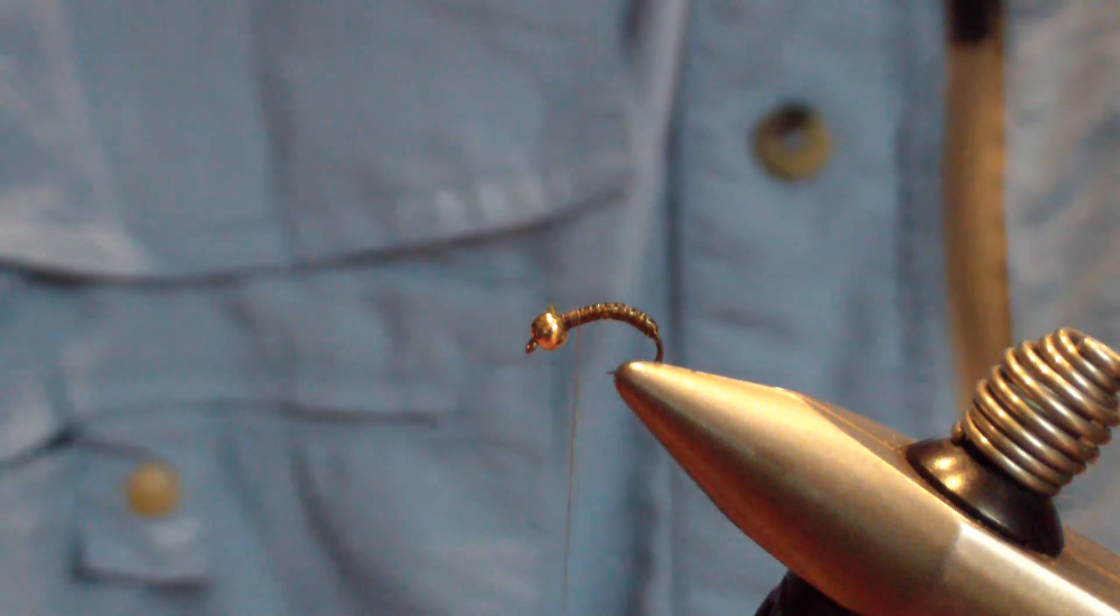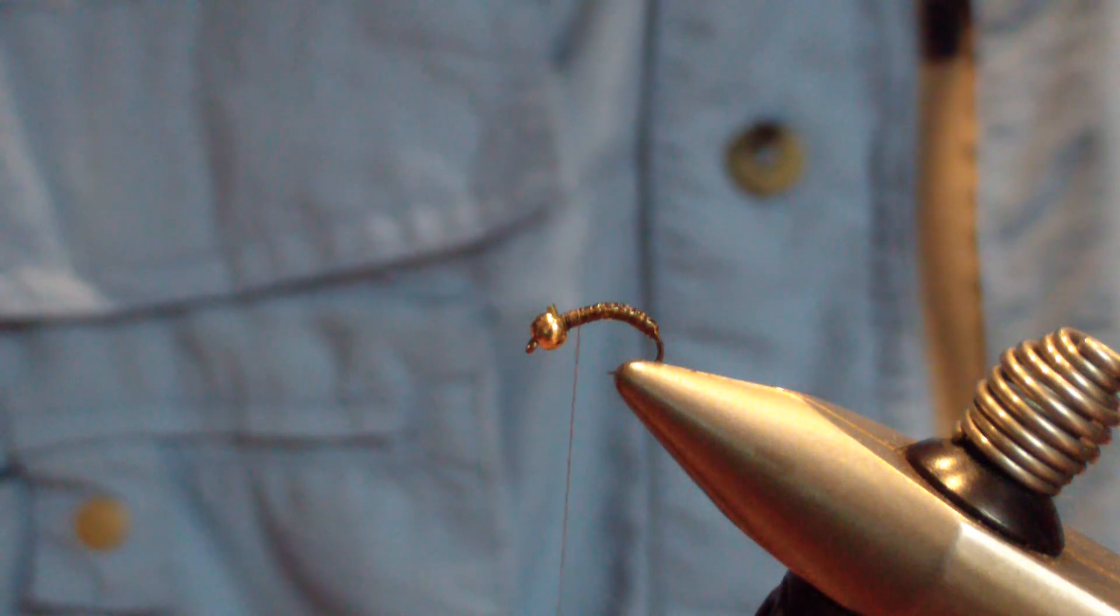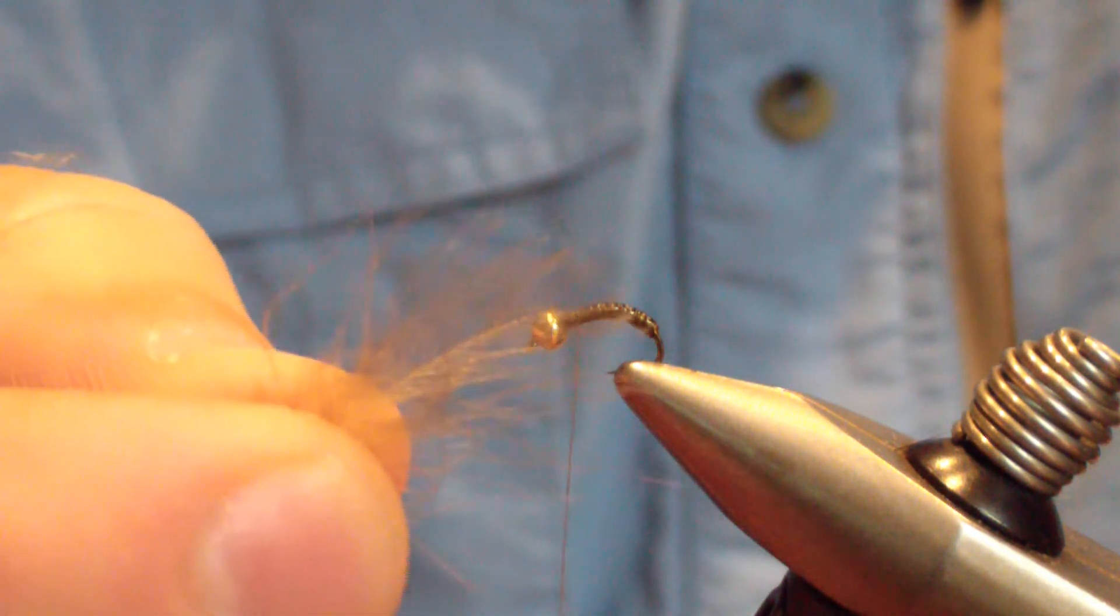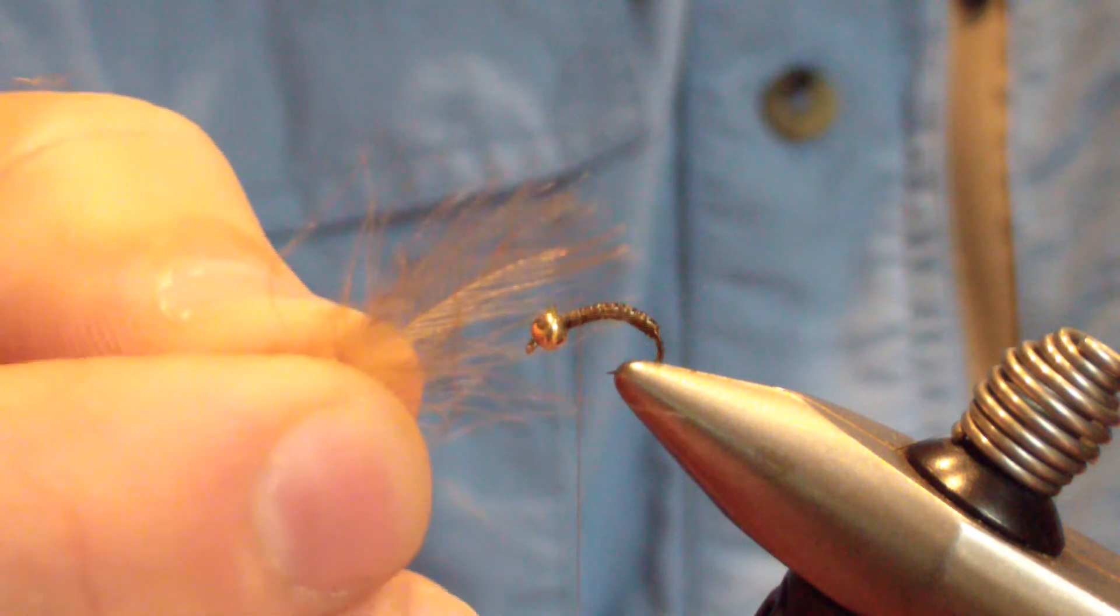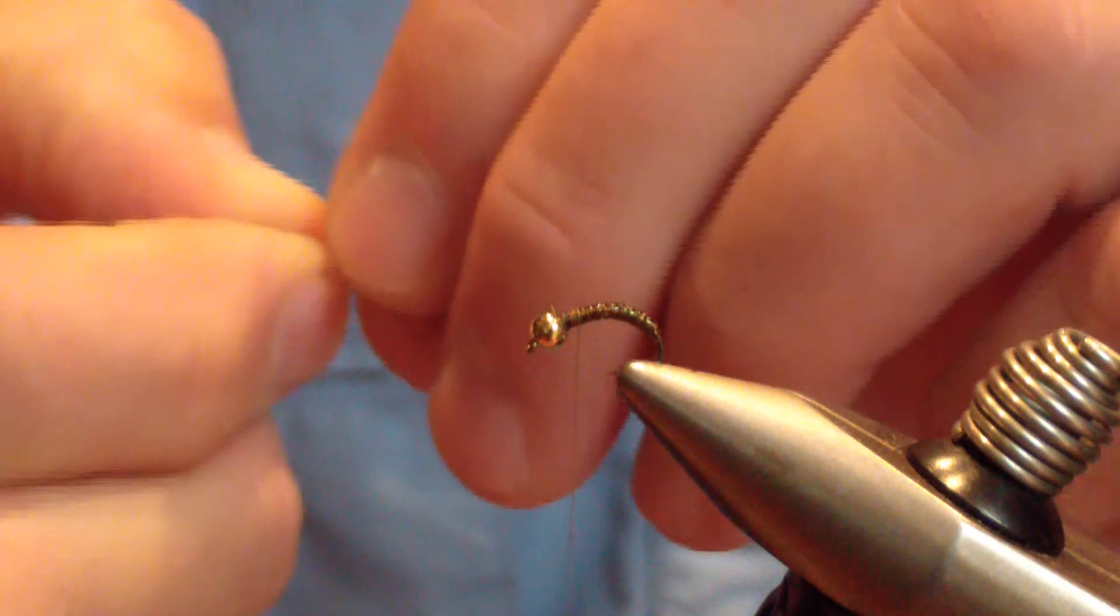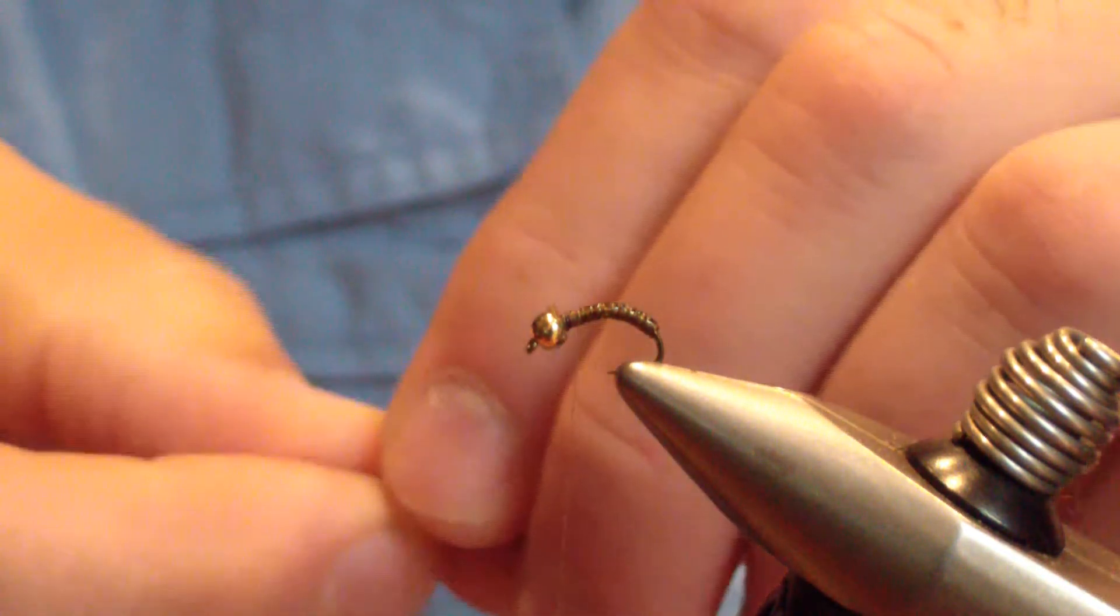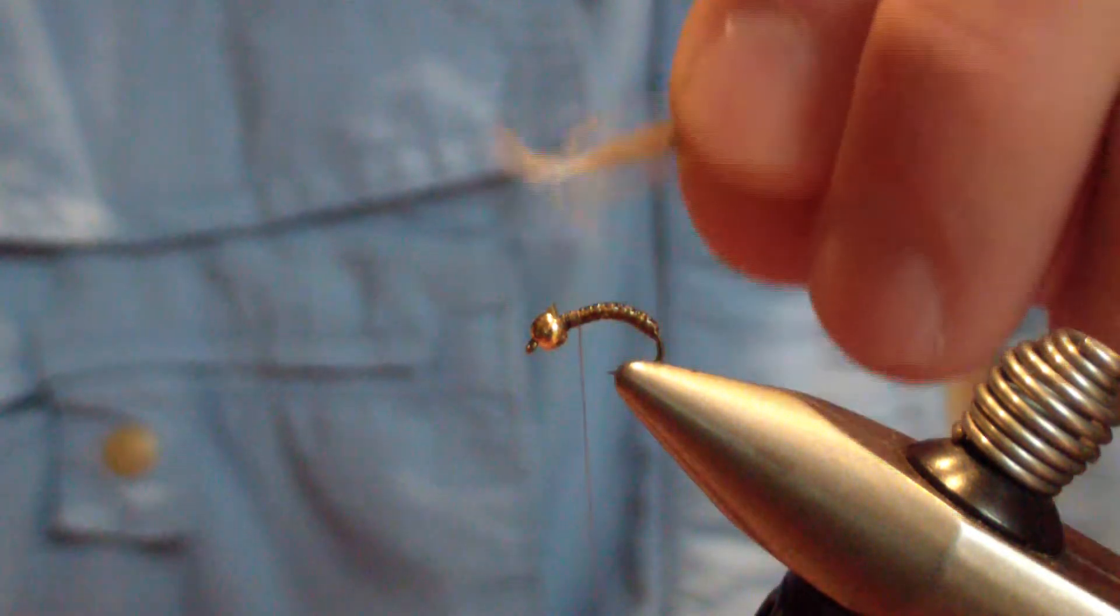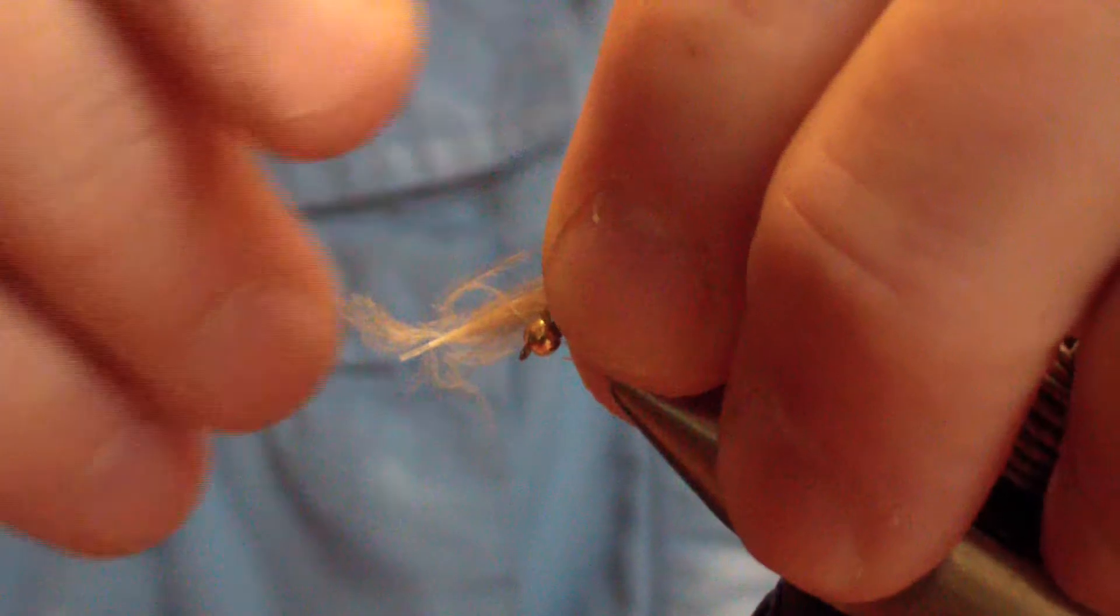The next material you're going to tie in is a natural CDC puff. I buy the puffs—you don't need the whole feather. This is just a natural color, like a dark, dark dun. Sweep the feather forward and tie it in about the middle with just a couple loose wraps.